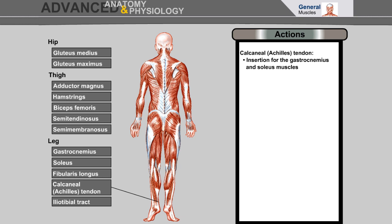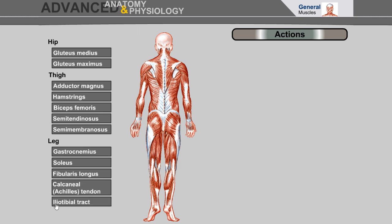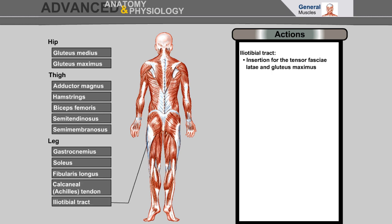Calcaneal tendon: insertion for the gastrocnemius and soleus muscles. Iliotibial tract: insertion for the tensor fasciae latae and gluteus maximus.